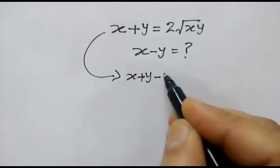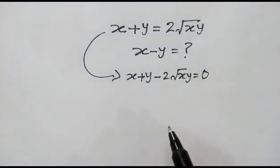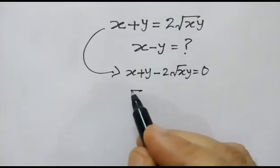Now this equation can be written as x plus y minus 2 square root of xy is equal to 0. This is the expression of square root of x minus square root of y whole square.